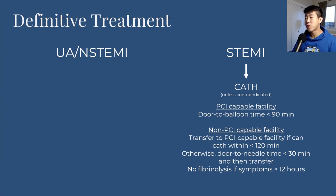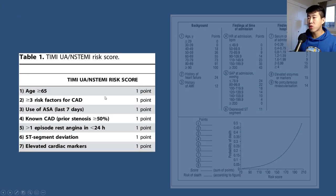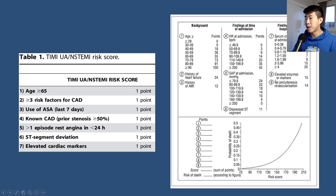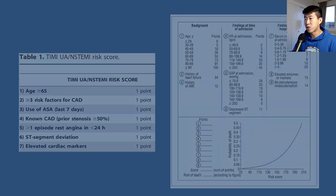For unstable angina and NSTEMI, use a risk stratification algorithm with the TIMI and GRACE scores to determine if the patient is high-, medium-, or low-risk. The TIMI score consists of seven factors, while the GRACE score is more complicated. I'd recommend using MDCalc to calculate their risk score.